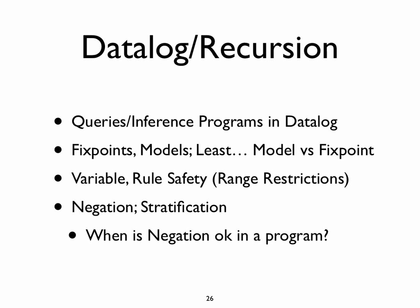Finally, we talked about datalog and recursion — in particular, fixed points, different ways of representing a datalog program, and different ways of thinking about the evaluation strategy, namely fixed points and models. We talked about what it means for a model or fixed point to be the least fixed point or model. We talked about variable and rule safety, namely range restrictions. We talked about negation, stratification, and when we can detect that a program is free from problems that arise due to negation.